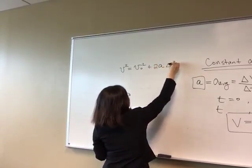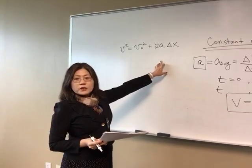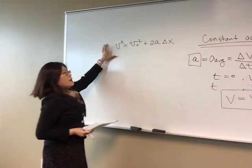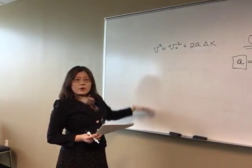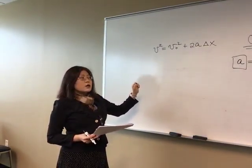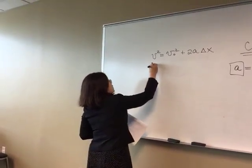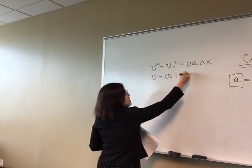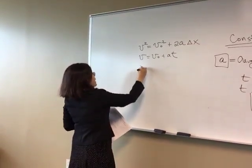That acceleration value is also going to equal the average acceleration, because it does not change. So you can take this and set it equal to A at any value — your A is just the average acceleration — so we drop the average subscript, and that's delta V over delta T.